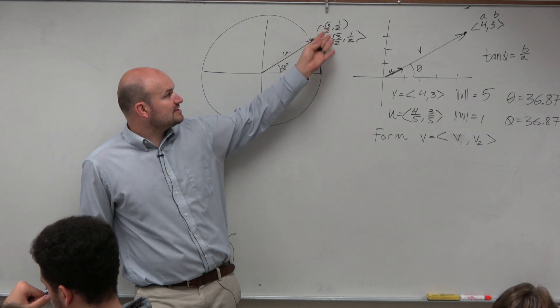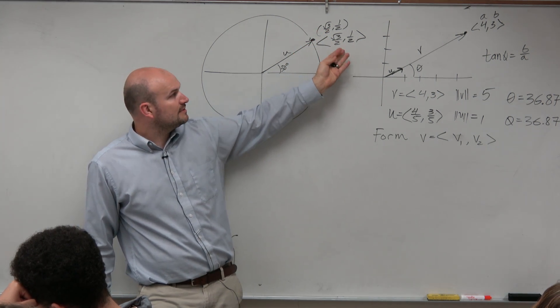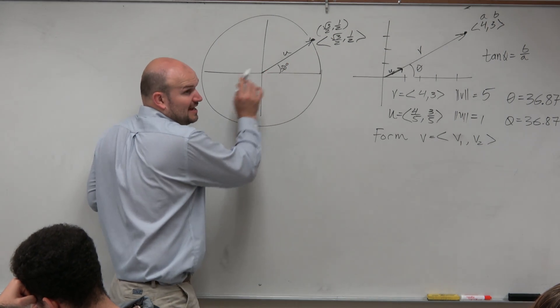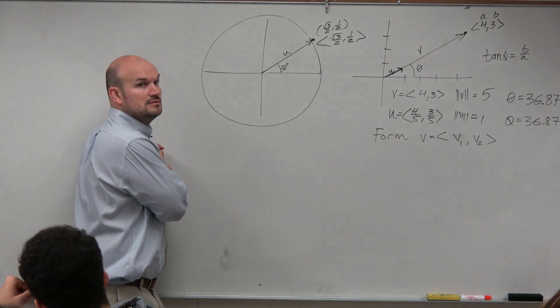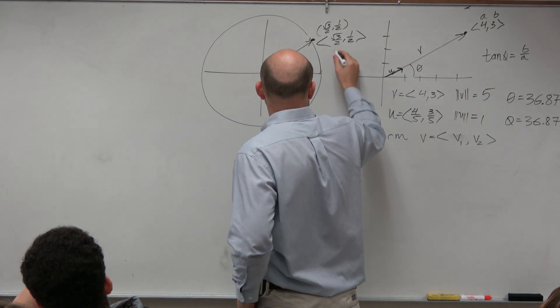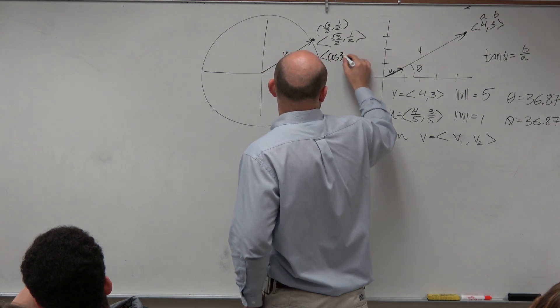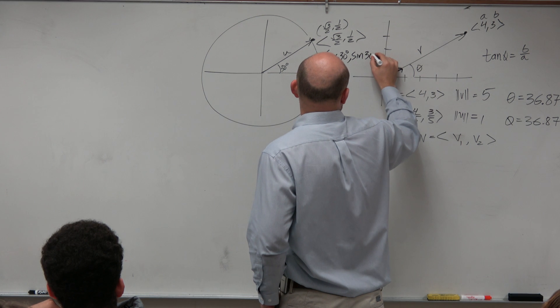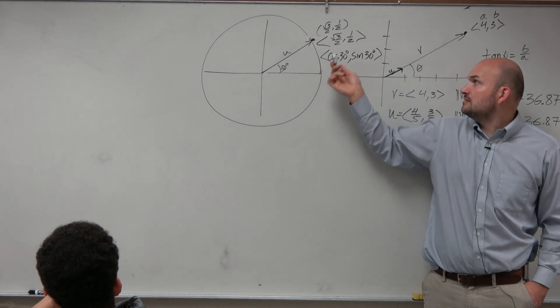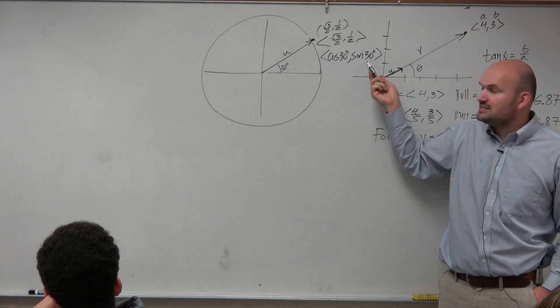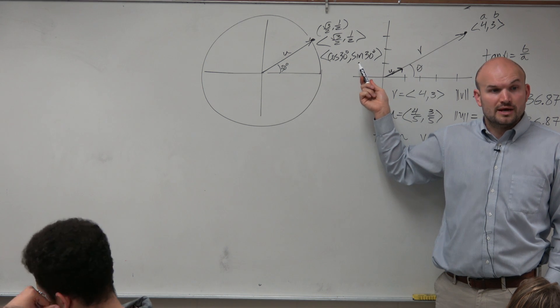Now, how else can we represent this vector? How else can we represent that in terms of its angle? Well, let me know if this works. Can we say the cosine of 30 degrees, comma, the sine of 30 degrees? Because what's the cosine of 30 degrees? Square root of 3 over 2. What's the sine of 30 degrees? 1 half. So couldn't we also rewrite it like this? Right.